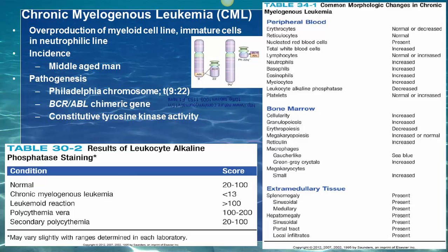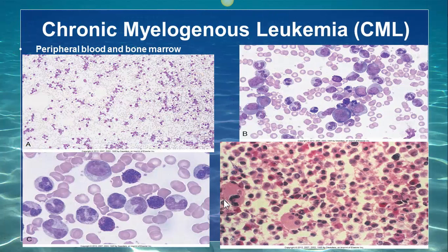The LAP score can be very useful at differentiating CML from other disorders, as shown in the smaller table — especially from leukemoid reaction. In peripheral blood, the figure on the top left shows leukocytosis, the top right shows segmented neutrophils and myelocytes, and the bottom left shows increased basophils.